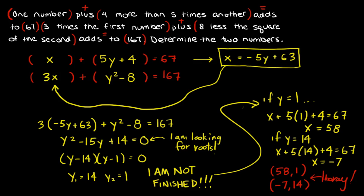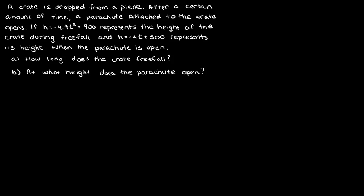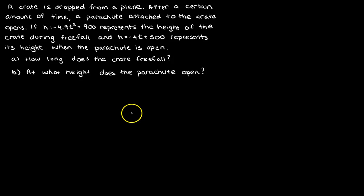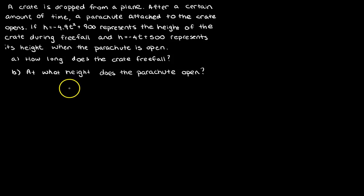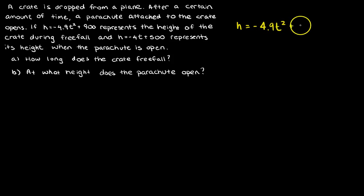Now we're going to look at the second question. I'm not actually going to answer the whole question, but I want to show you how graphing can really make you understand what's going on. A lot of you try to do this entirely by math and are getting horribly wrong answers. We have H = −4.9T² + 900.